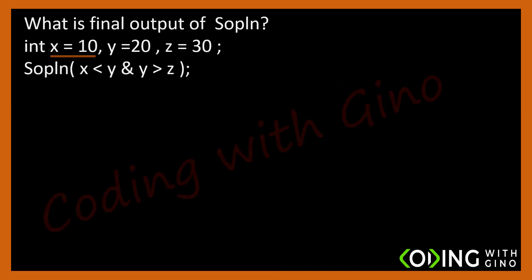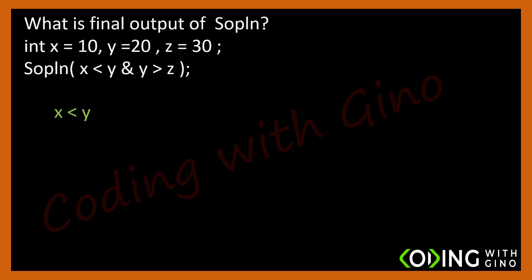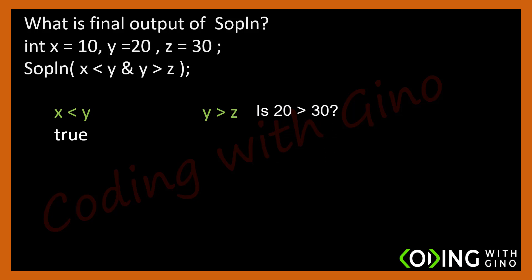Next: x equals 10, y equals 20, z equals 30. An AND operation is performed between two conditions. Is x less than y? Is 10 less than 20? Yes. The first condition is true. Is y greater than z? Is 20 greater than 30? No, hence it returns false. Finally, AND operation is performed between these two conditions. True AND with false evaluates to false, as per the logical AND table. So the output is false.